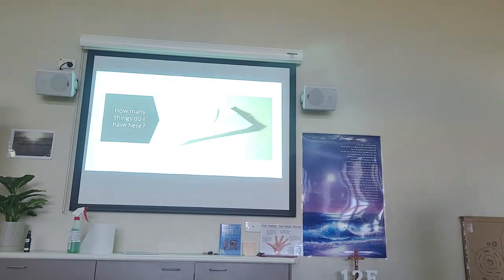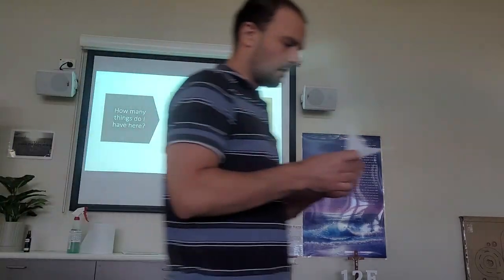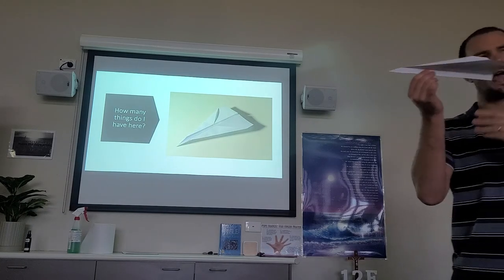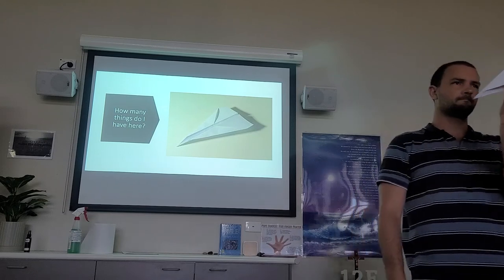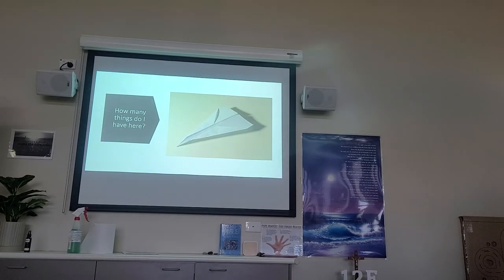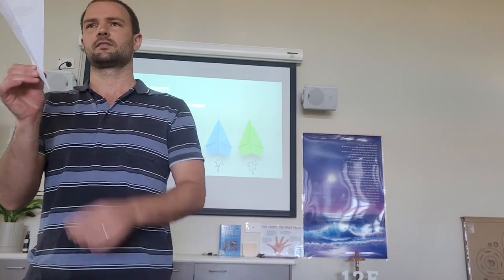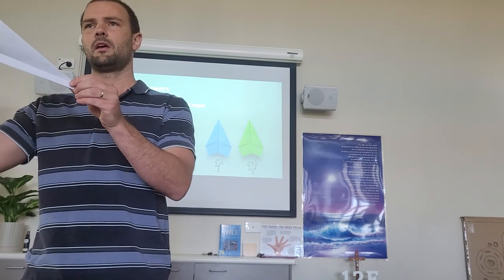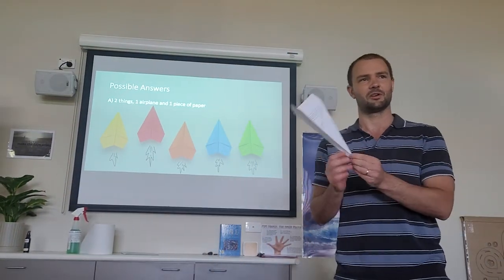What exists? I've got a paper aeroplane here — I made one before class. How many things do I have here? A simple answer might be one: we've got one aeroplane. But let's look at some possible answers. The first one is I've got two things: one aeroplane and one piece of paper. Any problems with that? One aeroplane and one piece of paper — so I've got two things here.